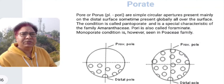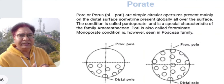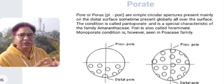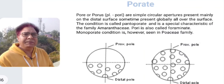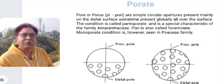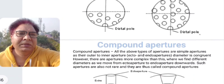Porate is an aperture which is rounded in outline. If there is a single pore, we call it porate. If the outer pore and inner pore differ in diameter, we call it pororate. Porate or porous apertures could be distributed on the distal pole, singly or as many pores along the distal, equatorial, or global surface. If present singly, we call it porous; if present globally, we call it pantoporous. Pantoporous condition is seen in the family Amaranthaceae, whereas monoporate condition is characteristic of the family Poaceae.